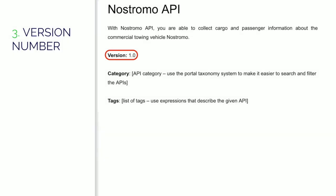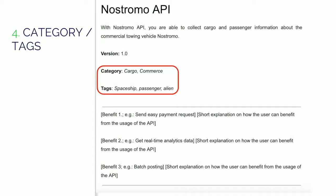The next section is the version number, which is a must-have because it's a very important factor of identification, and it comes from the specification file also. So, category and tags — I always use the portal tagging system to make it easier to search and filter the API.